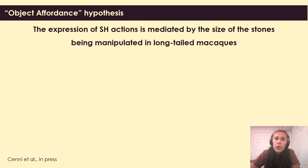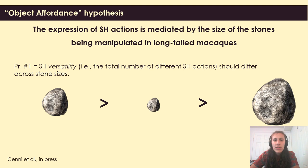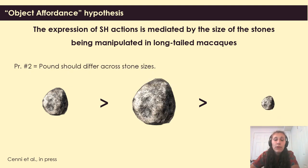In this study, we looked at the effect that stone size has on the expression of stone handling. Following the object affordance hypothesis, the properties associated with stone size afford different stone-directed actions. In line with findings from human and non-human primates, we predicted that stone handling versatility — defined as the total number of different stone handling actions expressed — would differ across stone sizes, with a higher versatility expected with medium, then small, and then large stones. Additionally, in line with findings of macaques which manipulate stones in the context of tool-assisted extractive foraging, we predicted that pounding actions would be preferably expressed with medium stones, then large, and then small stones.